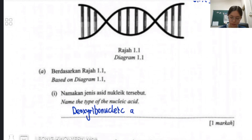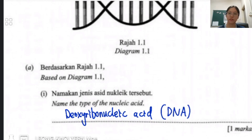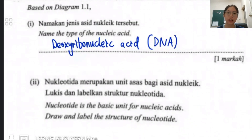Deoxyribonucleic acid — write that out if you are confident. But if you really cannot remember, then you have no choice but to write DNA and hope they accept that answer. Now let's continue to the next one.